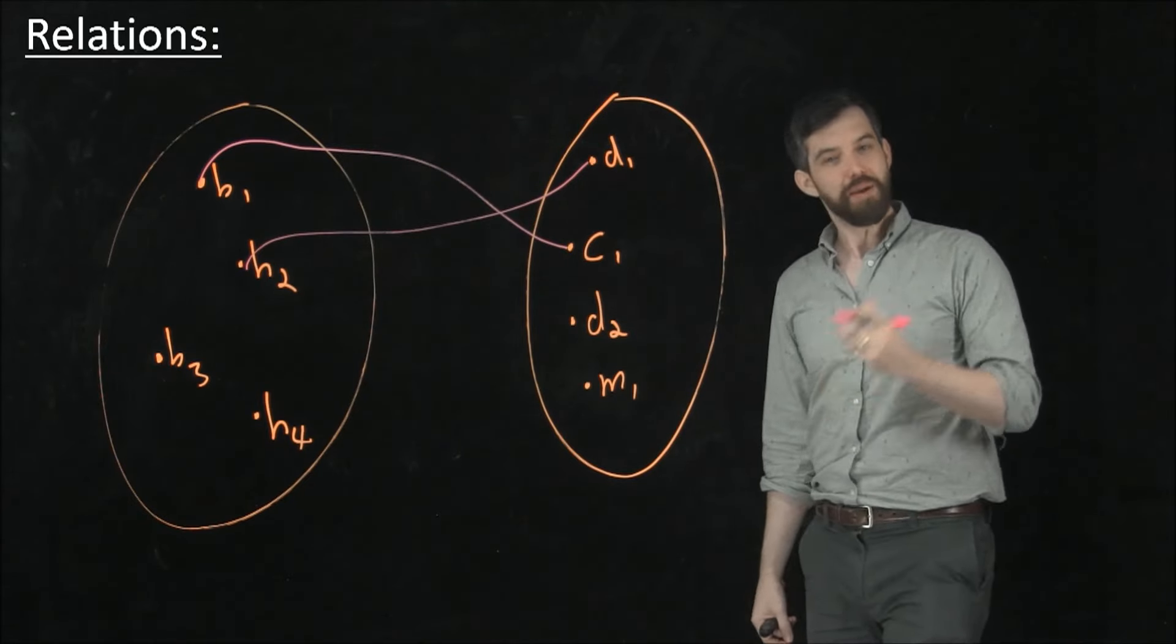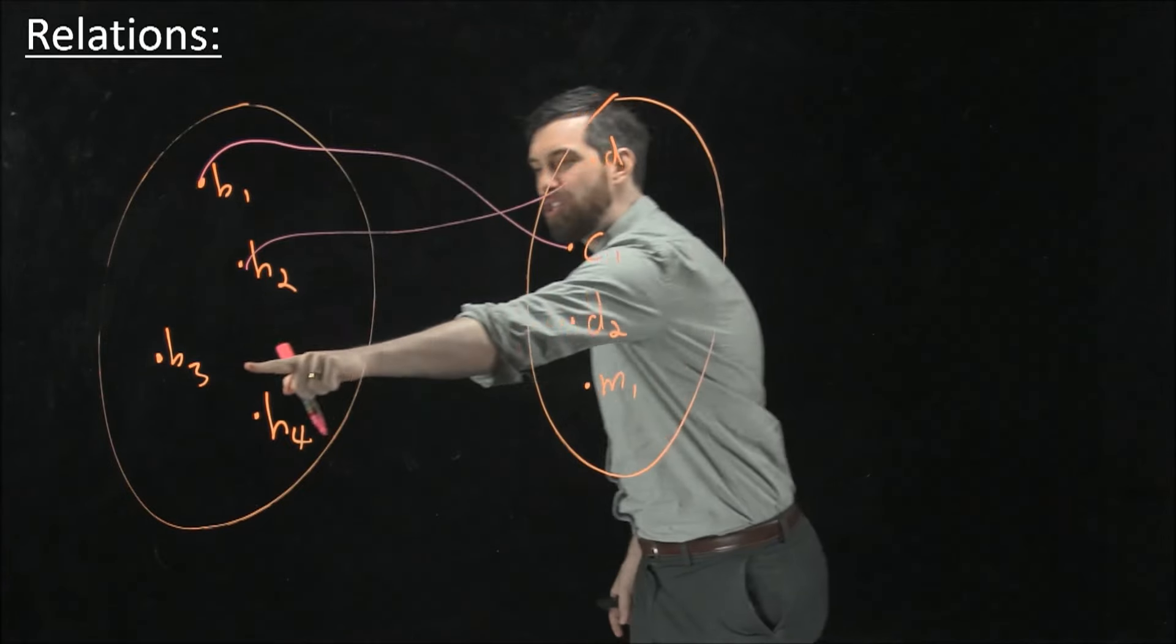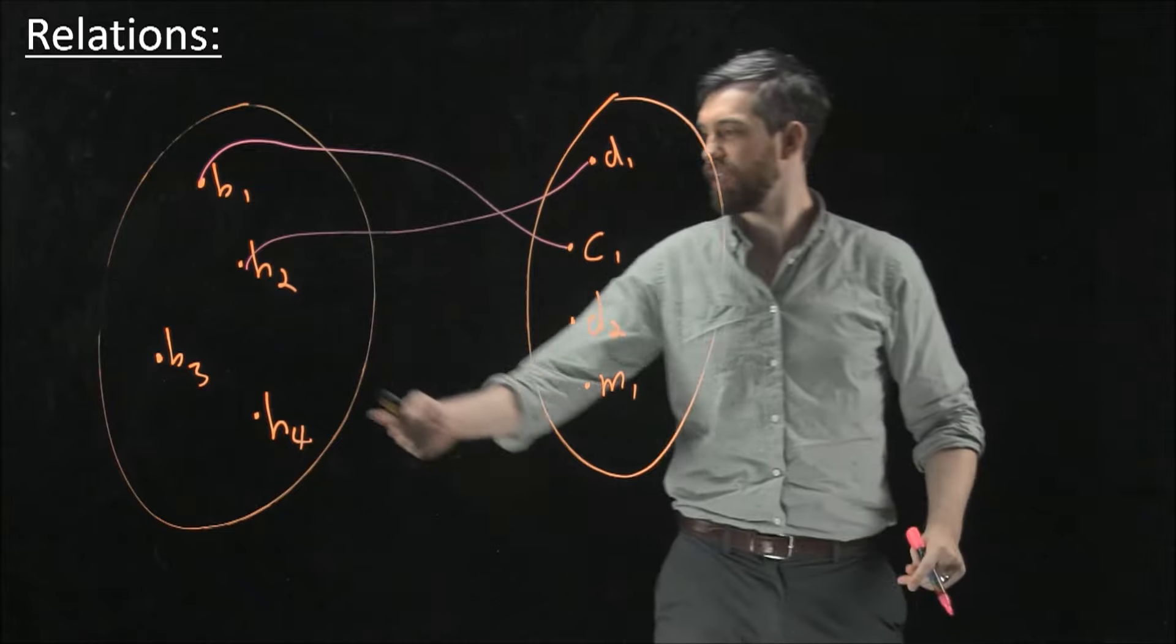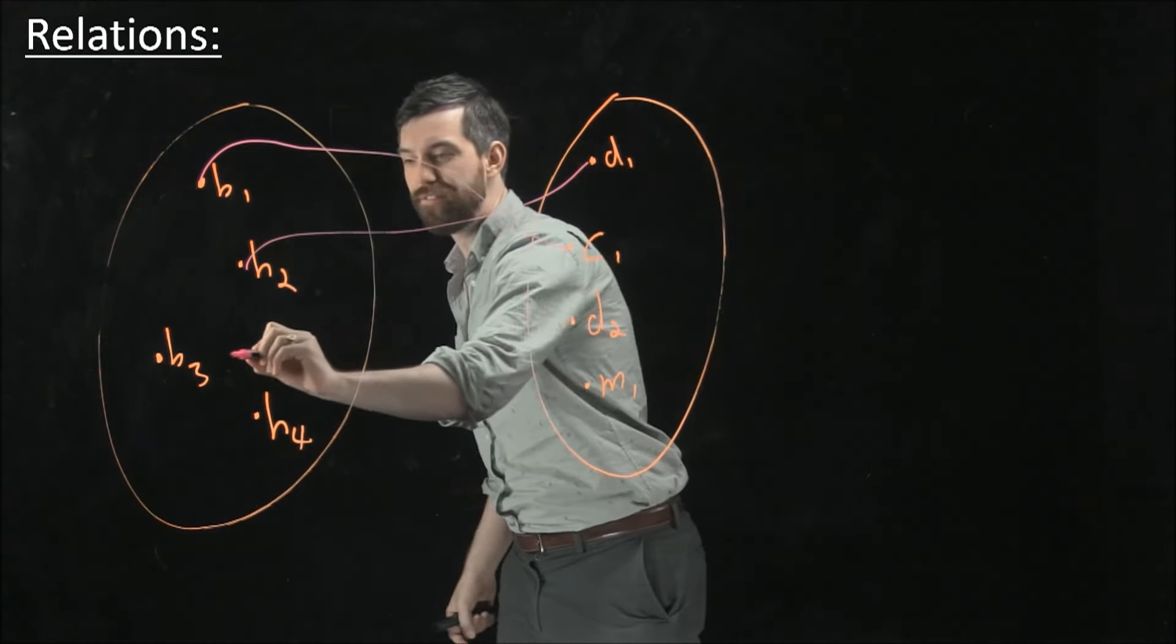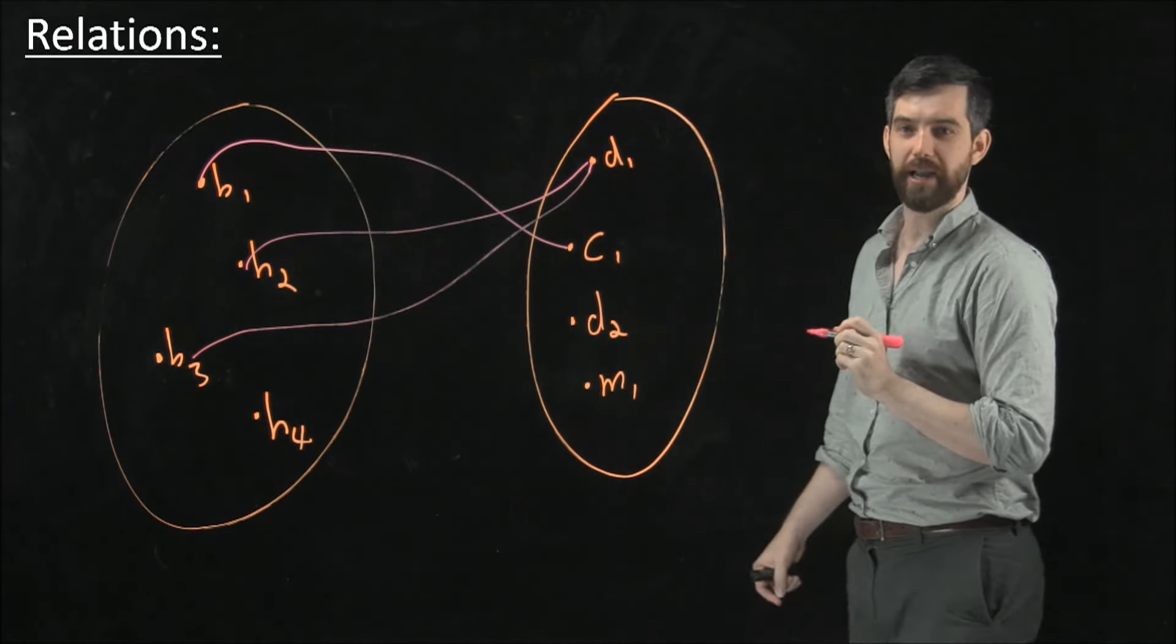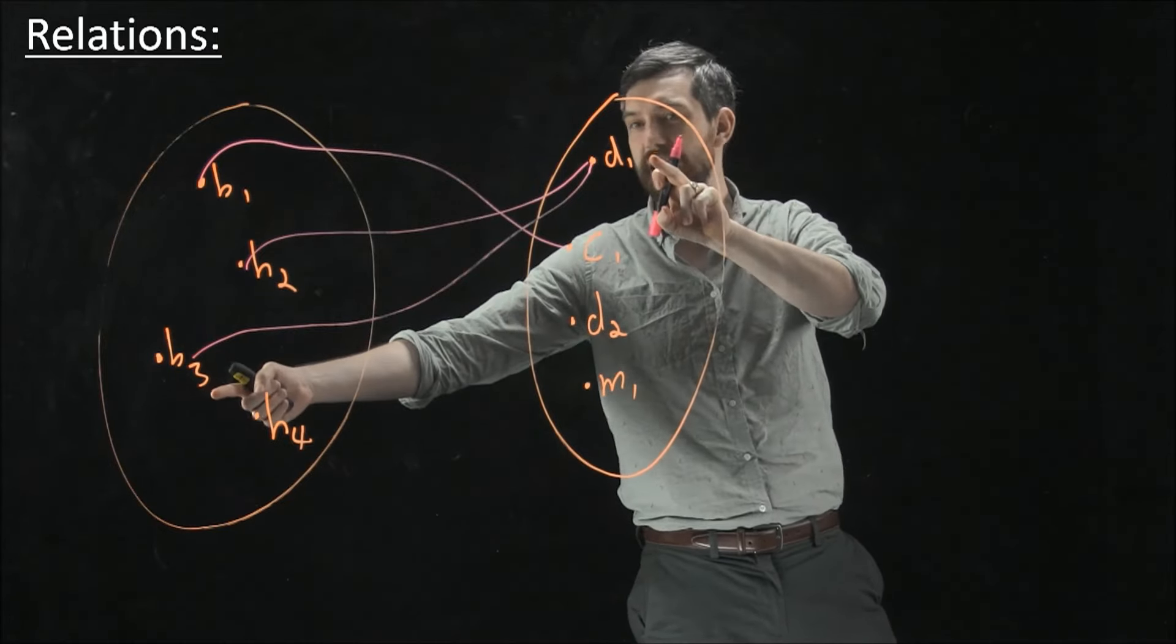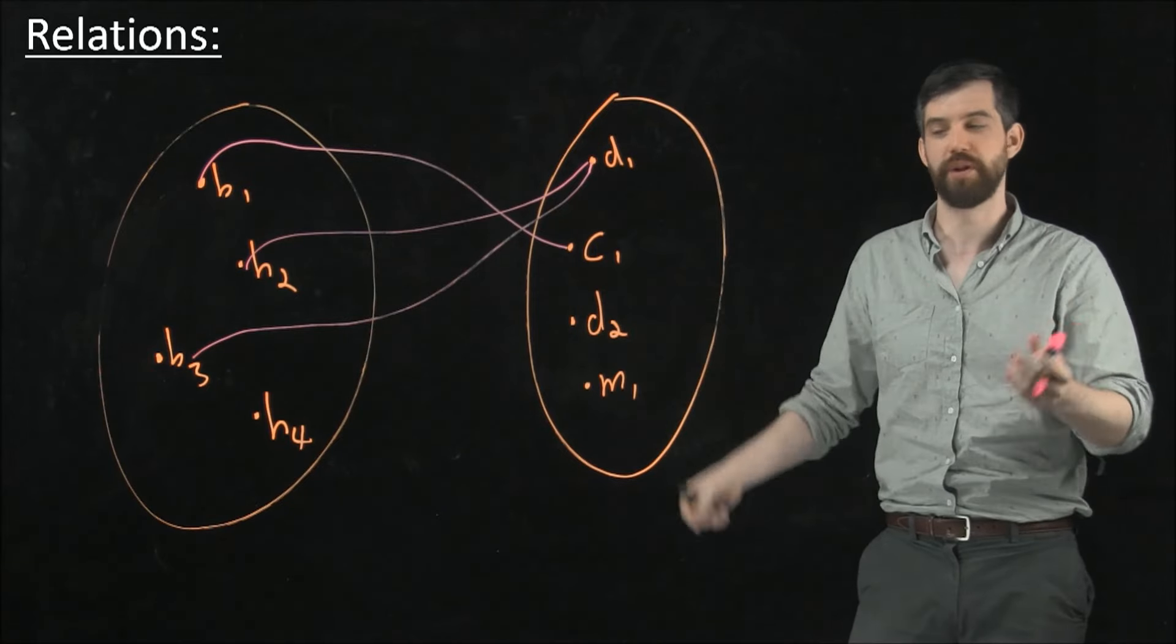And then maybe it's the case that this third human over here, it could be that he's connected. Maybe the third human and the second human live together. And in fact, the truth is that they both co-own this first dog. And so that really, both the pairs, H2D1 and H3D1, both of those pairs have a relationship of the human owning the particular pet.